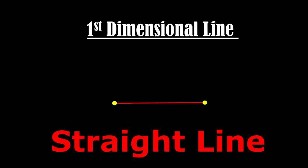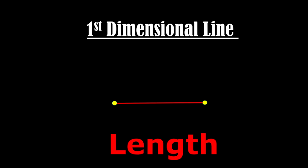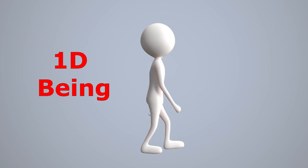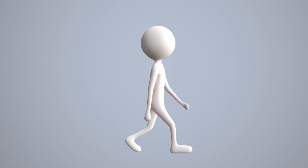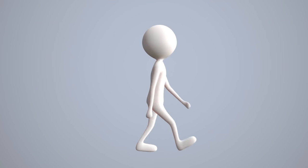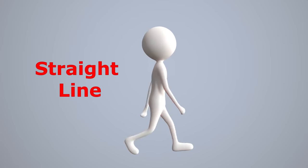First dimension. A straight line is an example of the first dimension that has only one dimension: length. A one dimensional being can move only in one direction, that is, on a straight line.